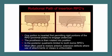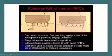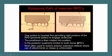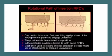What is the rotational path of insertion? We all know: when one portion is inserted first, permitting rigid portions of the RPD — those are the proximal plates — to engage the undercuts. The prosthesis is then rotated into position. In the posterior quadrants, it is limited to tooth-borne RPDs, most often used to restore anterior extension defects — where use of attachments or clasps is unfavorable.